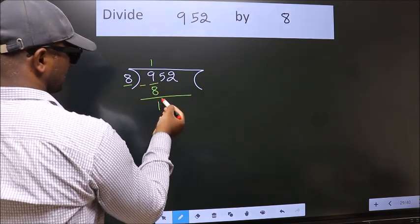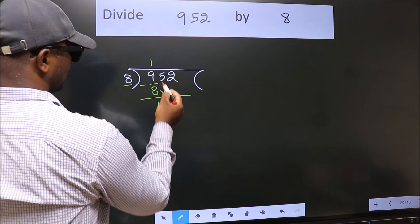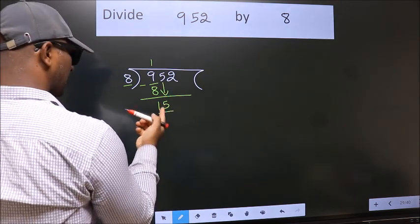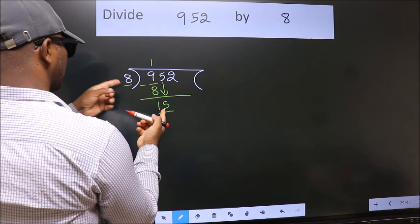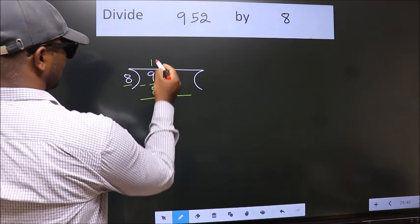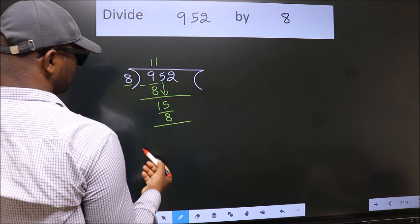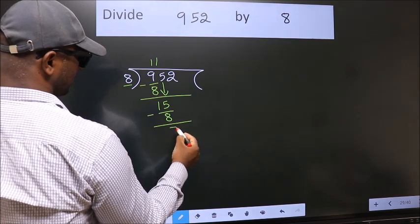After this, bring down the beside number. So 5 down, so 15. A number close to 15 in the 8 table is 8 once 8. Now we subtract. We get 7.